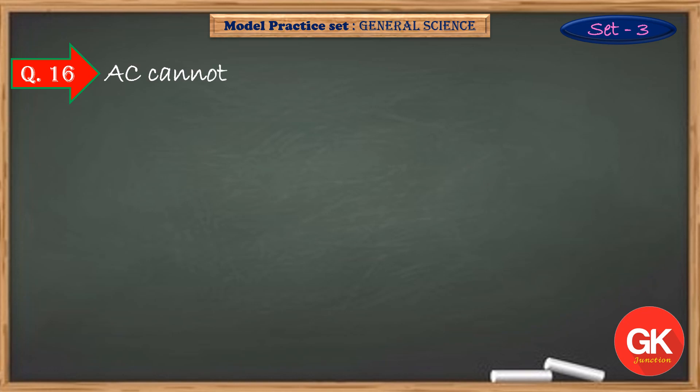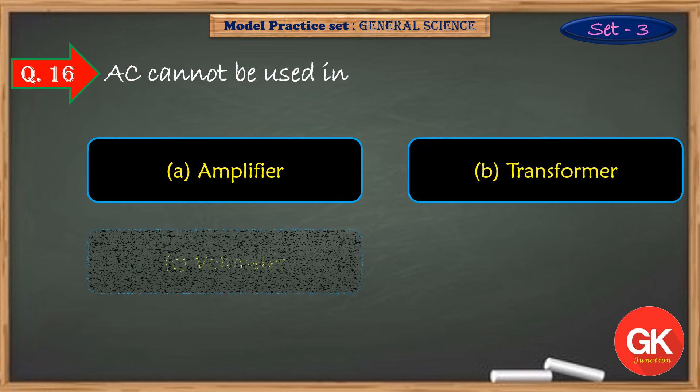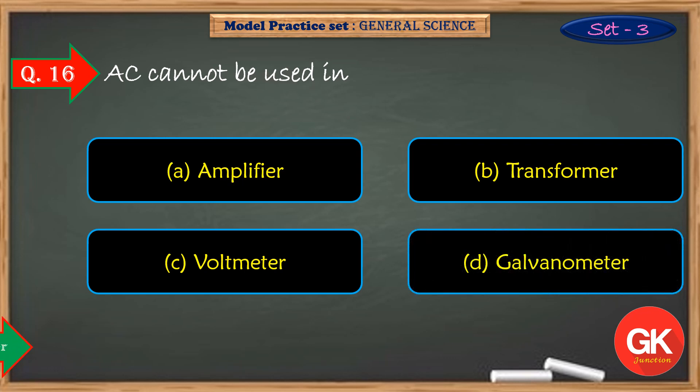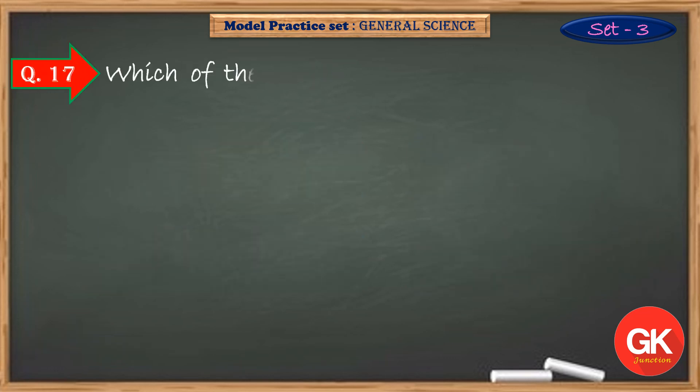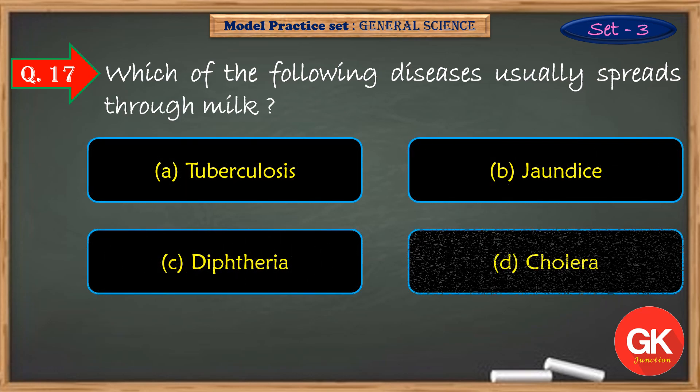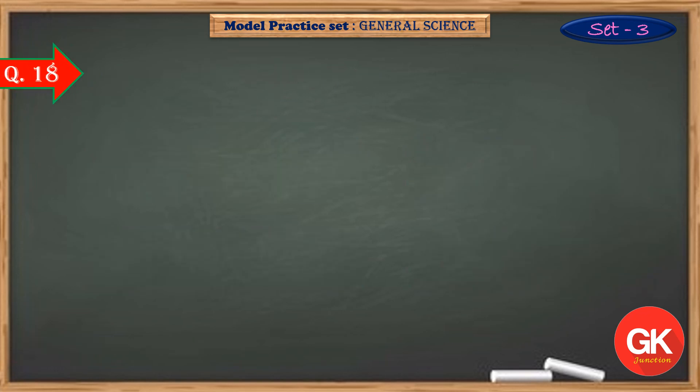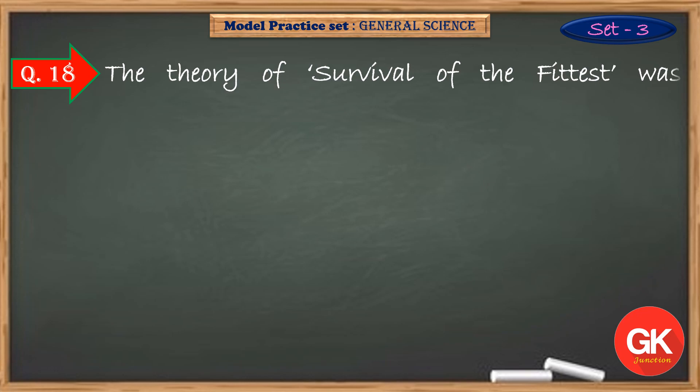AC cannot be used in. Which of the following diseases usually spreads through milk? The theory of survival of the fittest was propounded by.